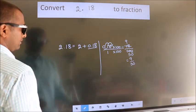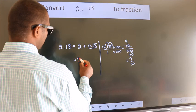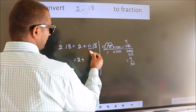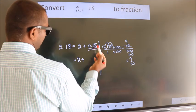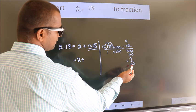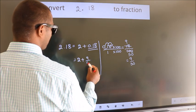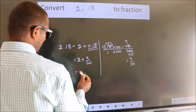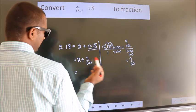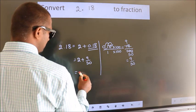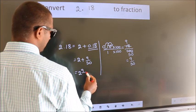Now here, 2 plus 9 by 50. In mixed fraction it is 2 9 over 50.